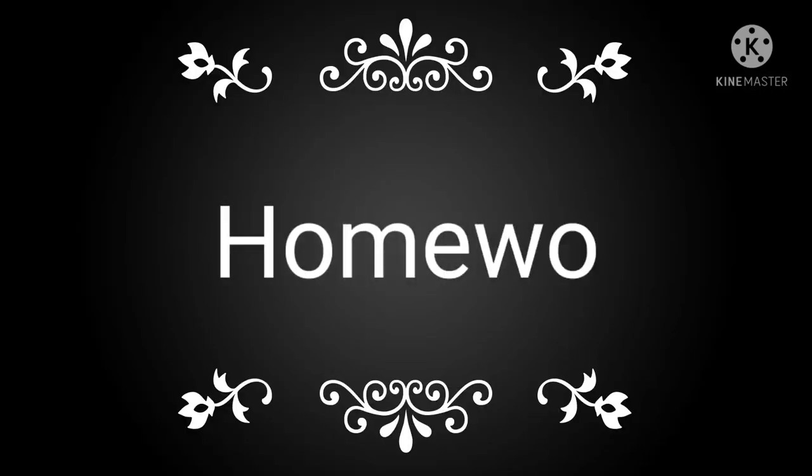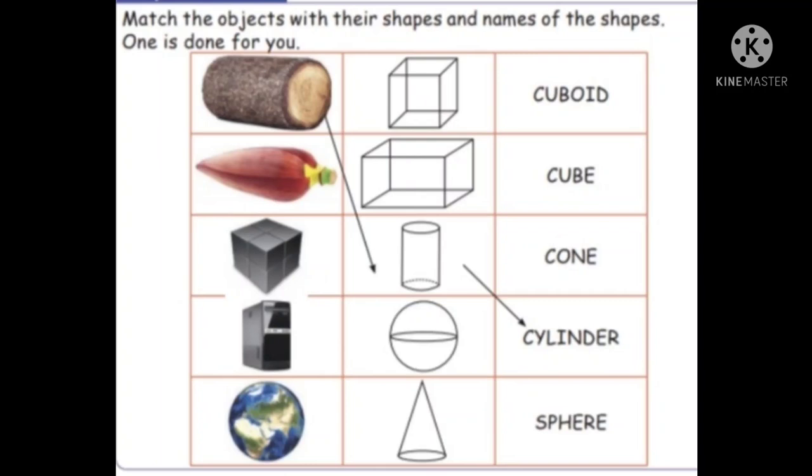Next one, Homework. Match the objects with their shapes and names of the shapes. We have to match the objects related to the shapes and also match the correct spelling. One is done for you. Remaining you do it. Ok, children?